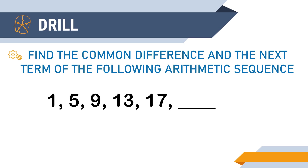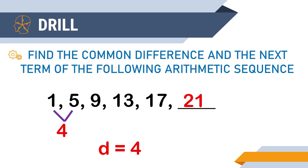The common difference is 4. You can obtain it by subtracting any consecutive terms, such as 5 minus 1 equals 4. And the next term for this arithmetic sequence is 21 — you simply add 4 to the term 17.